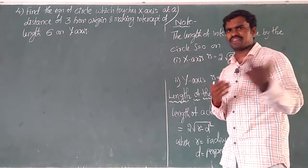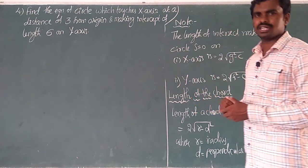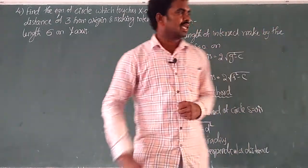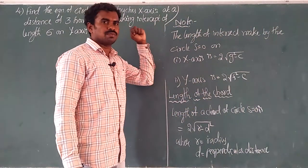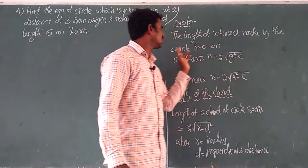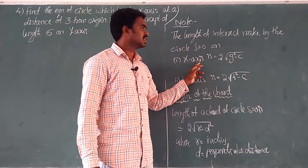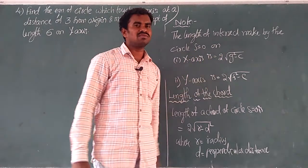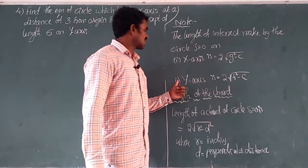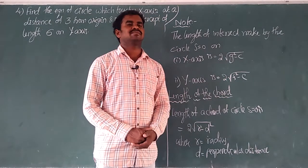Before that 4th question, write down a small note. The length of intercept made by the circle S = 0 on the x-axis is 2√(g² − c). On the y-axis it is 2√(f² − c).